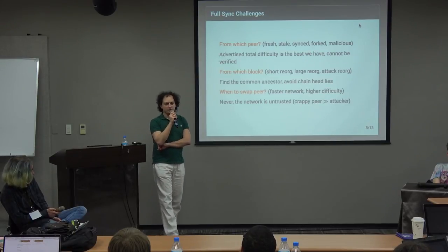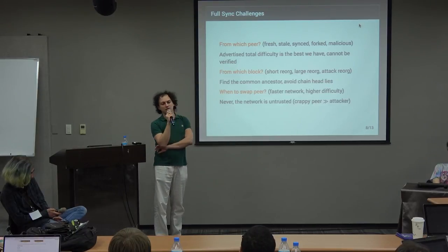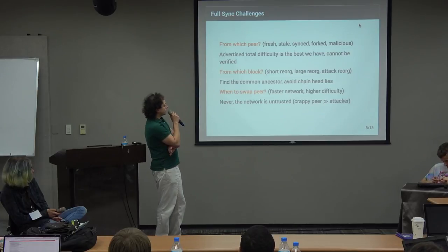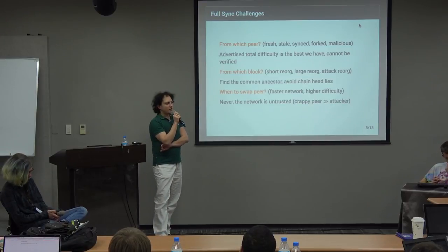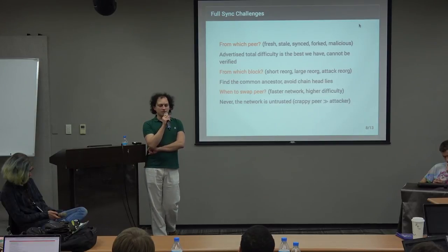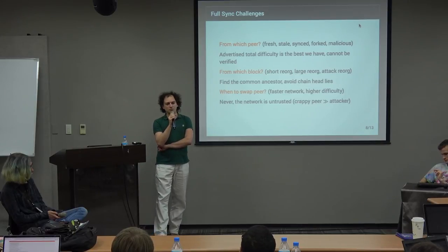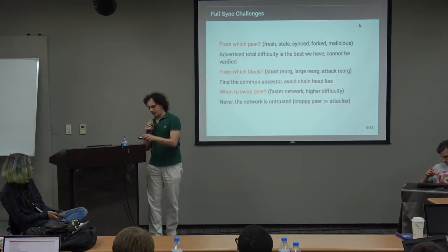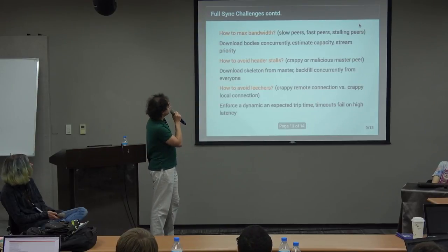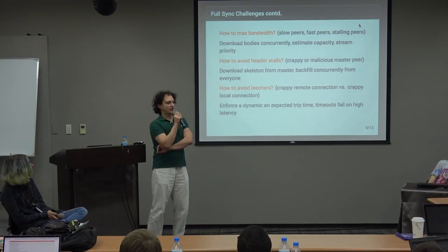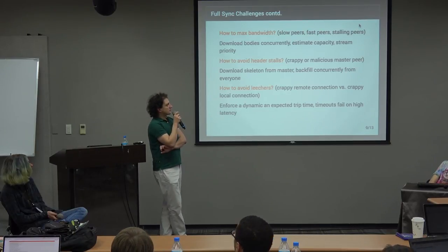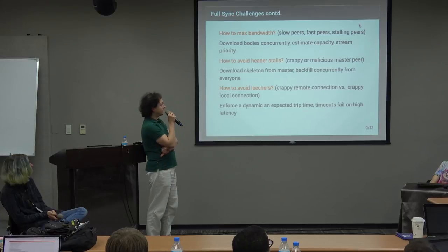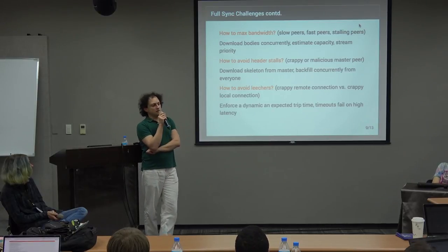Since networking is untrusted and every kind of garbage that can come over the network eventually will, you need to treat network traffic accordingly. The key insight is that a crappy peer that does something is infinitely better than an attacker. You need a huge reason to switch away from even a very slow peer. Of course, this creates the problem of how to actually maximize bandwidth.